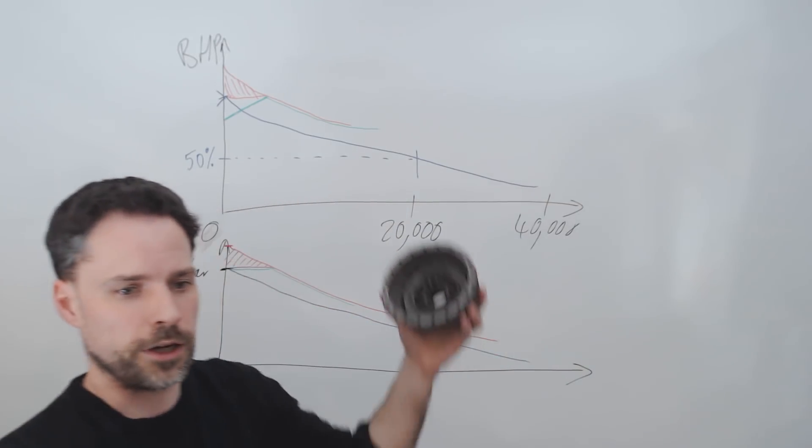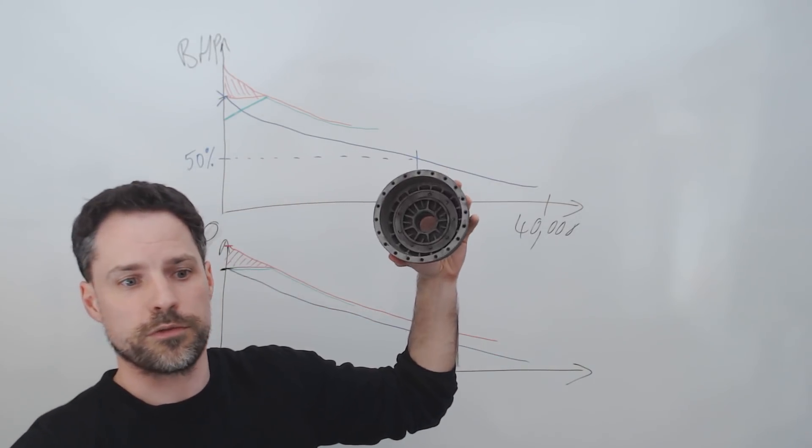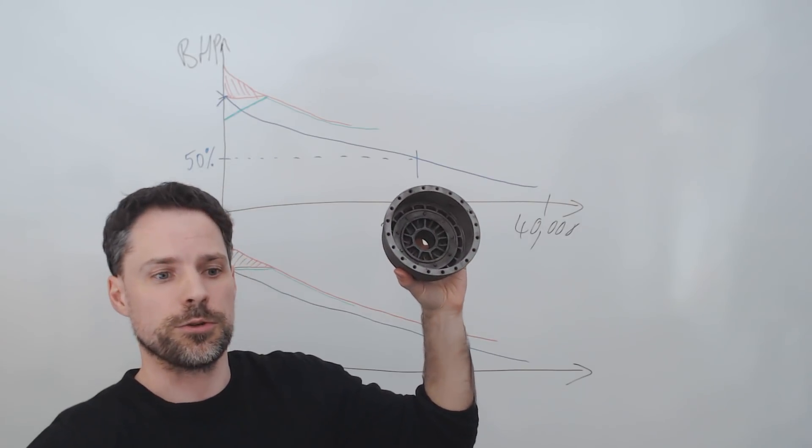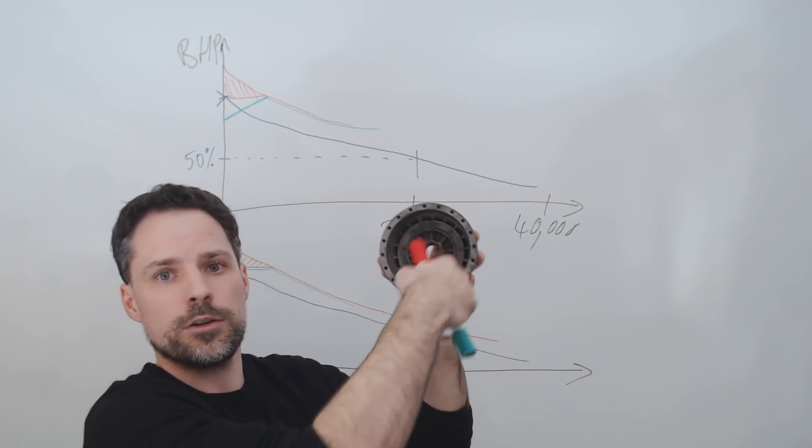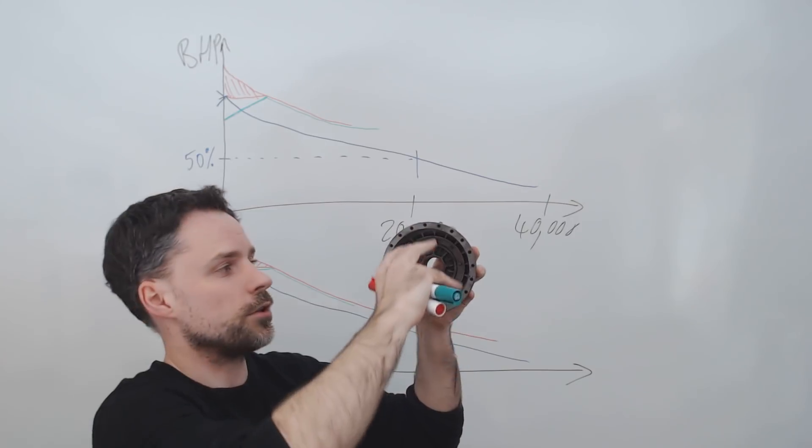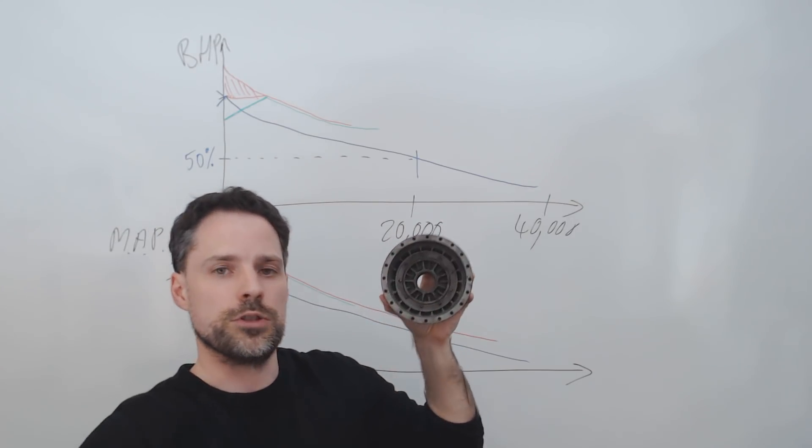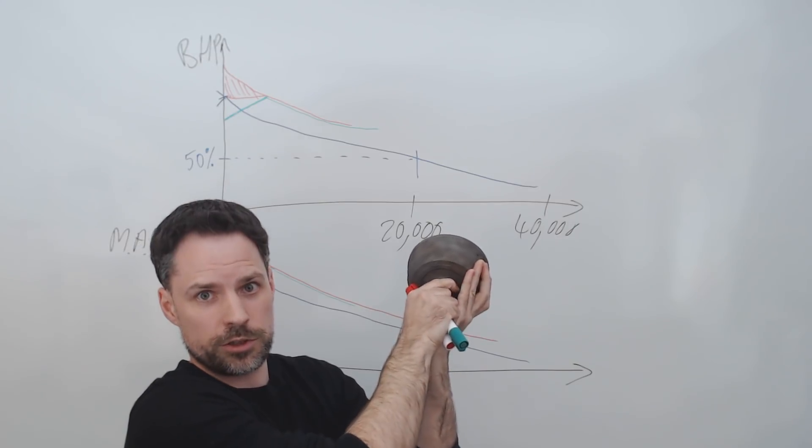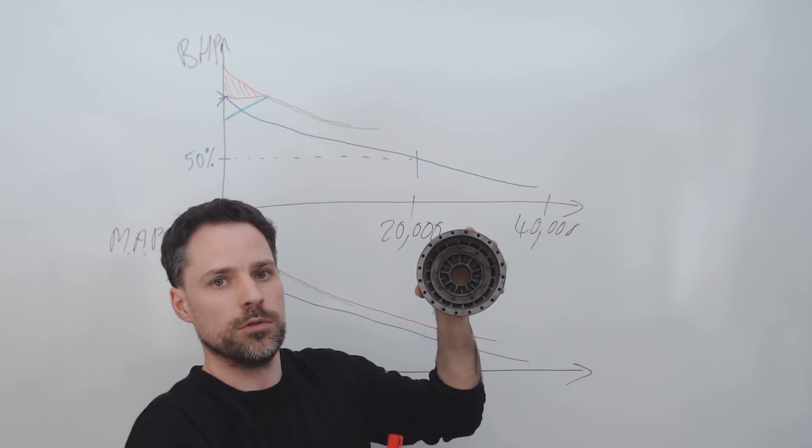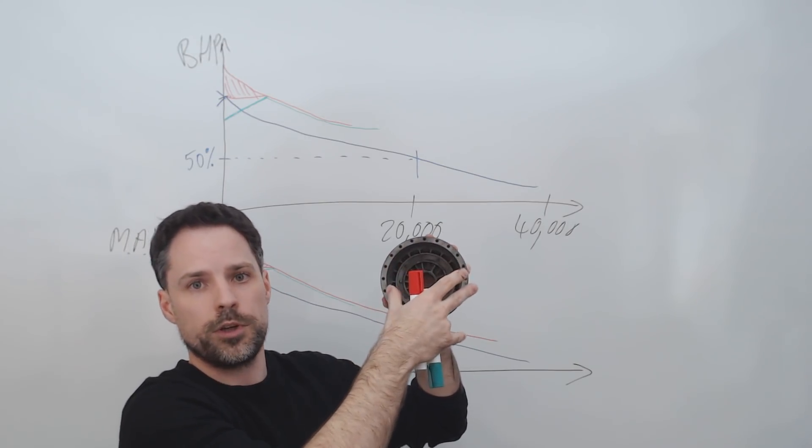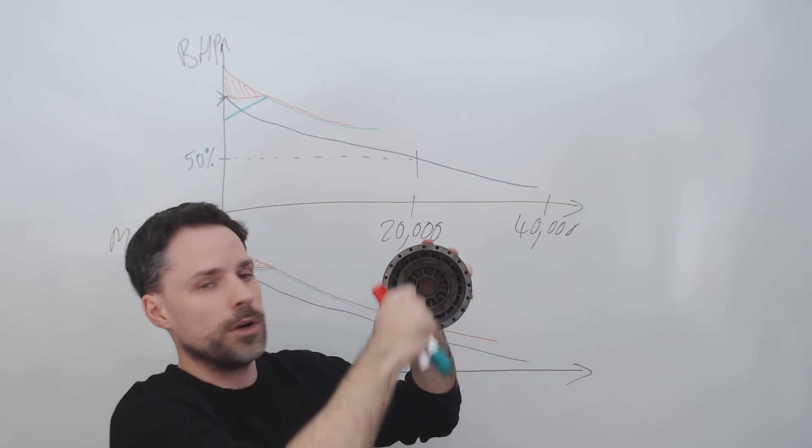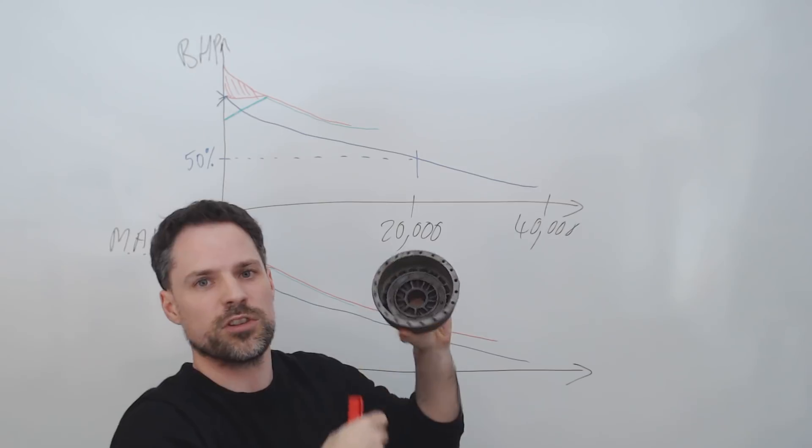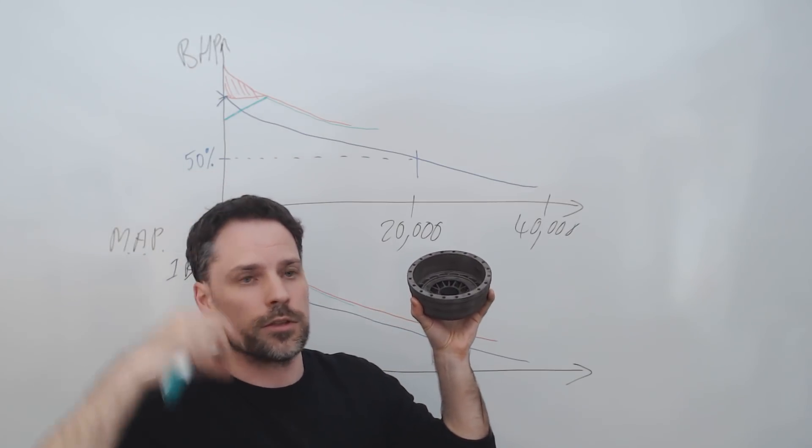And basically what we have is this is one half of Daimler-Benz's supercharger drive coupling. So in here we've got oil and there's a rotor inside which is connected to the supercharger, and this side is connected to the crankshaft. And when this is filled with oil it's about one to one speed. And as we lower the amount of oil in here, it turns at a different speed, so it's a kind of variable speed gearbox basically.